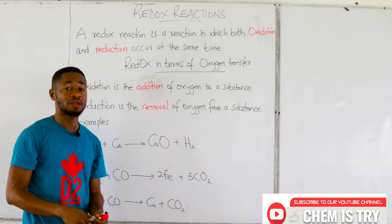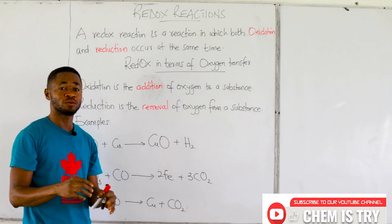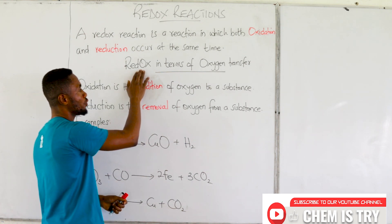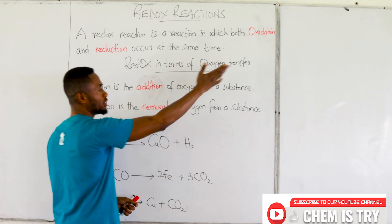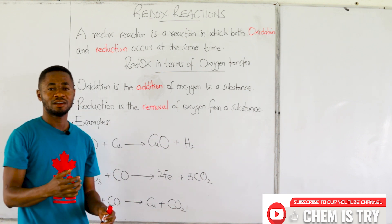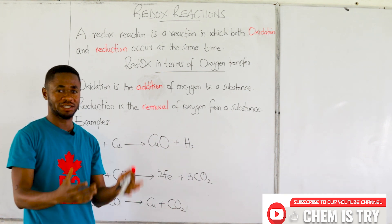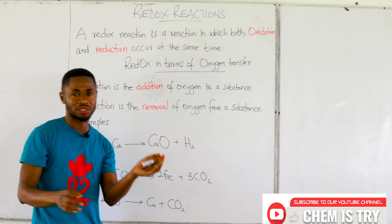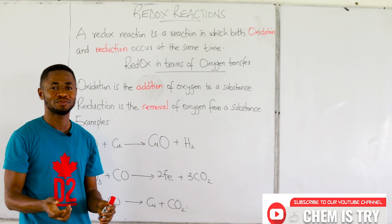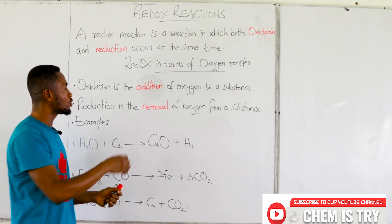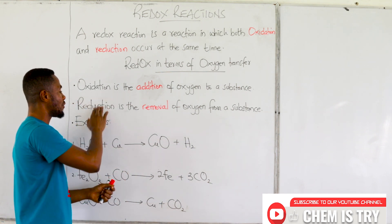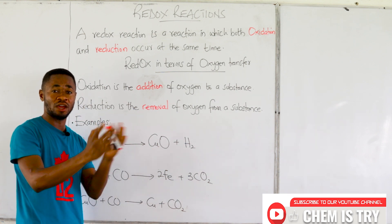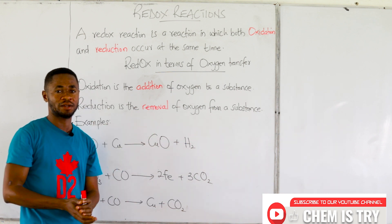There are about three different ways to define oxidation and reduction — there are other ways, but I would like to focus on three. The first one is redox in terms of oxygen transfer. We know the atom oxygen, and we are going to learn how oxidation and reduction describe the transfer of oxygen from one substance to another.